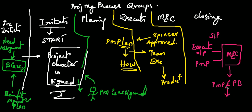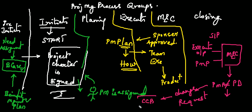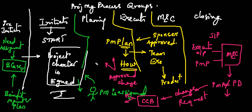If the project management plan equals the output deliverable, you're happy and you move forward. If they are not equal, we submit a change request. This change request goes through integration via a board called the CCB — the Change Control Board. The CCB may approve or reject the change. If approved, two things are updated: the baseline and the project management plan.